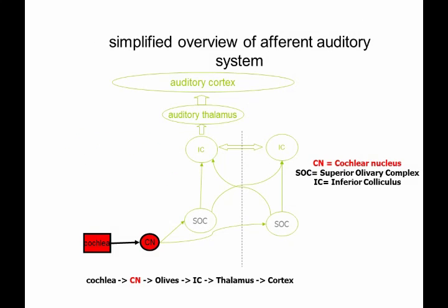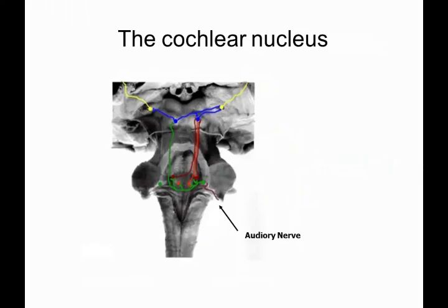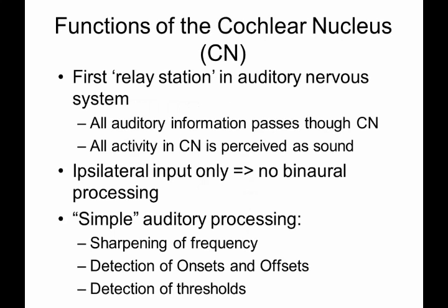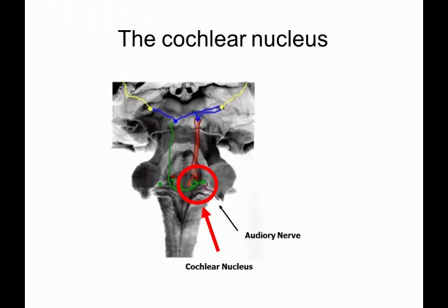What we know is that the cochlea projects via the auditory nerve into the cochlear nucleus — and I know a lot about the cochlear nucleus because that's where I did my measurements. The auditory nerve projects ipsilaterally into the cochlear nucleus. The cochlear nucleus is what we call the first relay station in the auditory system. All auditory nerve fibers project into the cochlear nucleus, which means all activity in the cochlear nucleus is perceived as sound. Have you heard of brainstem implants? That's a step beyond cochlear implants.